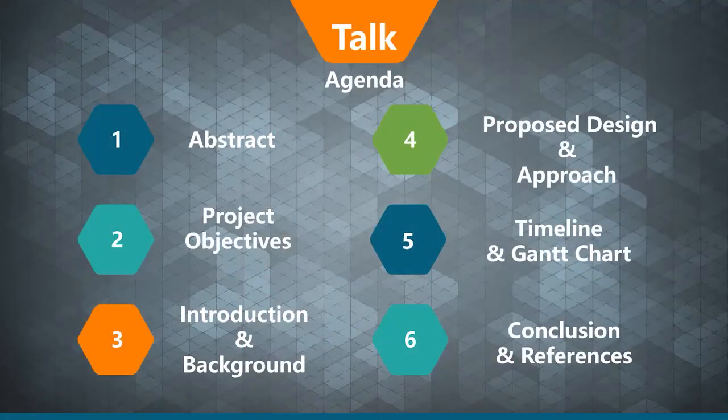Today we have six parts to share with you. The first is the abstract and project objectives, then introduction and background, proposed design and approach, timeline and Gantt chart, and finally the conclusion and references.